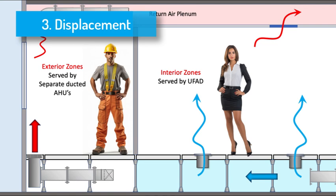3. Displacement ventilation systems — these systems are designed to supply conditioned air at low velocities near the floor level without significant induction of room air. The cooler supply air forms a stable, stratified layer that displaces the warmer air upward, resulting in a distinct separation of supply and room air, allowing the warm air to rise and be expelled at the ceiling. These can be used in a raised floor system for office spaces or in high-traffic public areas like airports, hidden in architectural features like ticketing or baggage check-in counters, or under an escalator. The diffusers blend in with the overall aesthetics so as to avoid visual disruptions.